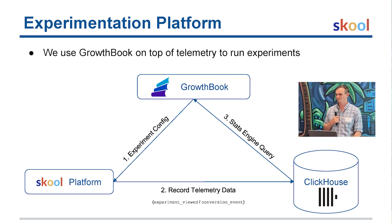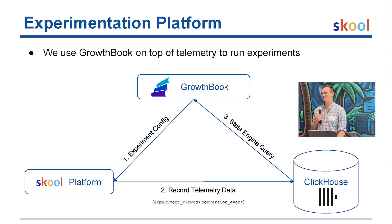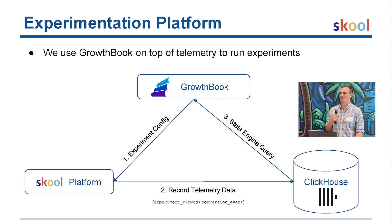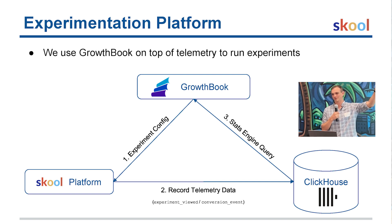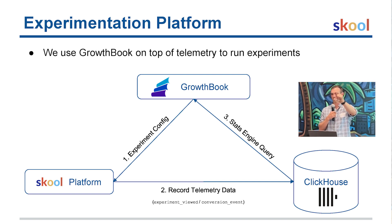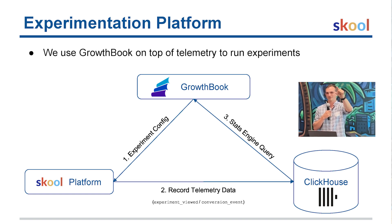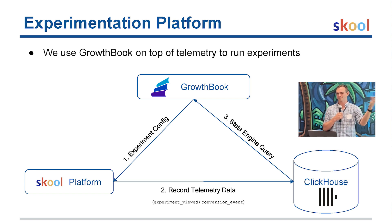On what a stats query is: at the core of experimentation, you're looking at how many people saw the existing page, how many did the thing you wanted them to do, and that gives you a percentage conversion. Then you compare that against how many people saw the experiment variant and how many did the desired action. You're basically comparing those two to see if the variant is actually better than the control — in which case you switch — or maybe it's worse, and you try something else.